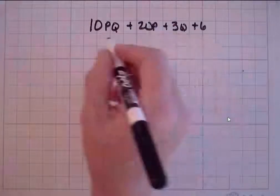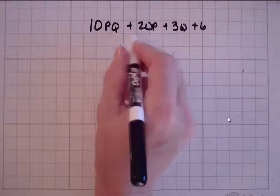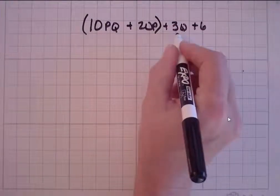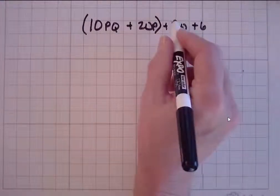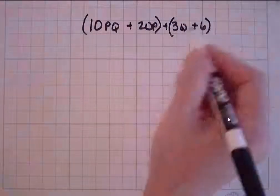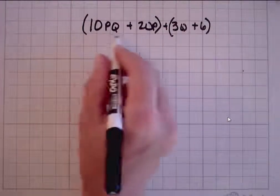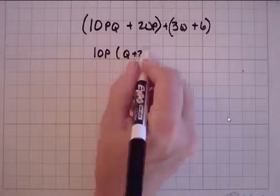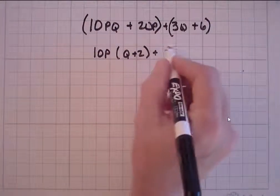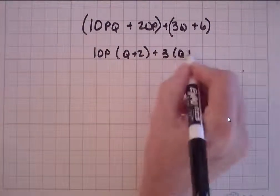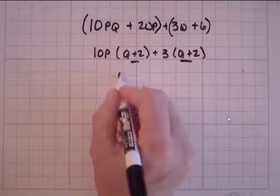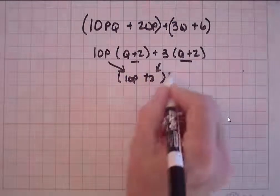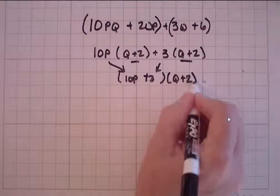This is a case of factoring by grouping. I like that I have 10 and 20, and they both have a p, so I'm going to put those two together in a group. And for 3 and 6, I know those are factors — 3 is a factor of 6 — so I'm going to put those two in a group. For this first set of parentheses, I can factor a 10p out, and I'm left with q plus 2. For this second set, I can factor a 3 out, and I'm left with q plus 2. Since that's the same, I can take the 10p from here, plus 3 from there, and multiply that by q plus 2, and now I'm done.